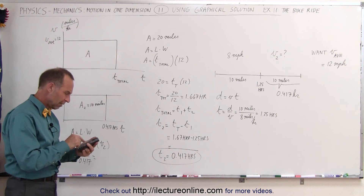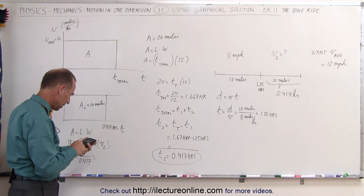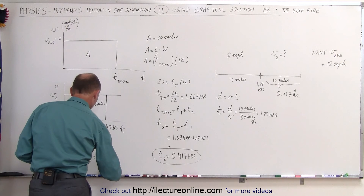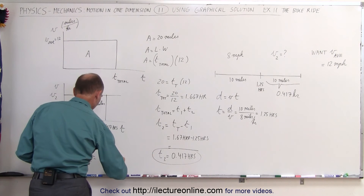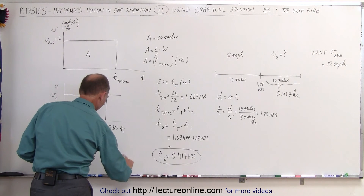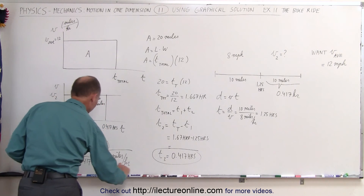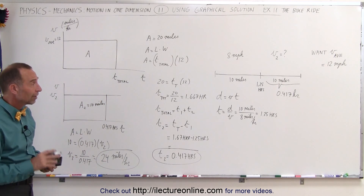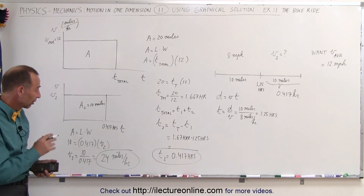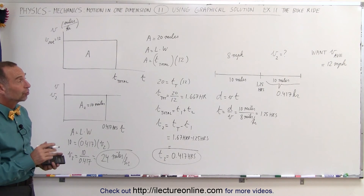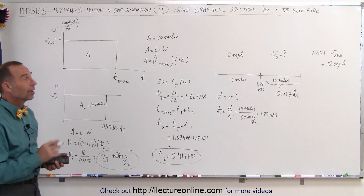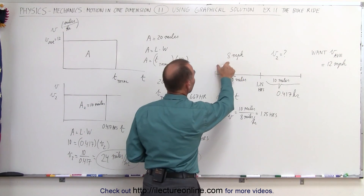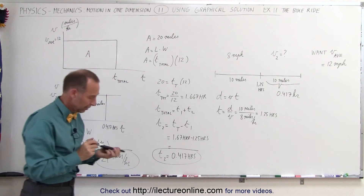Taking the inverse and multiplying by 10, we get V2 equals 24 miles per hour. That is the velocity required during the second part of the trip — the last 10 miles — in order to achieve an average velocity of 12 miles per hour when the first 10 miles were covered at 8 miles per hour.